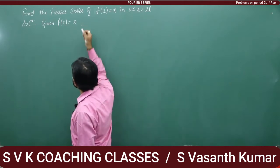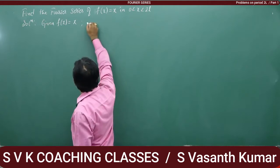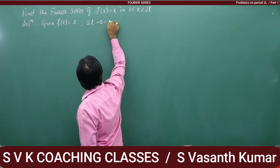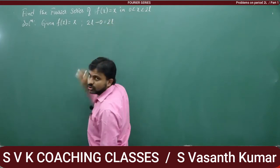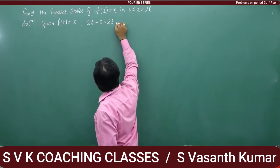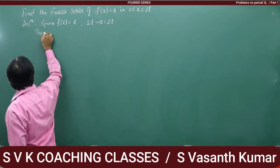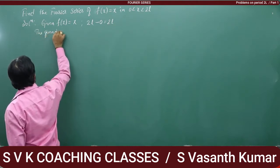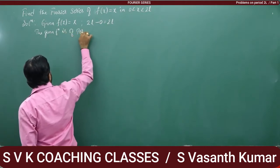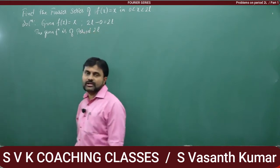The next thing I require is to find the period of the function. Upper limit 2L minus lower limit 0 equals 2L. Therefore, the given function is of period 2L.